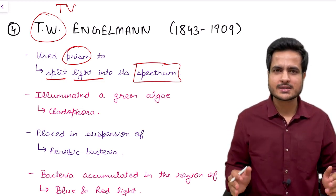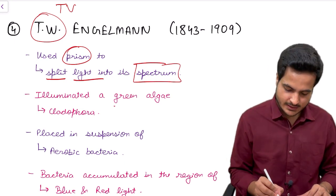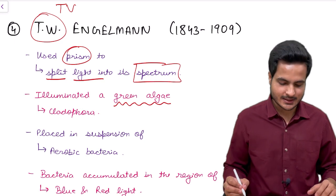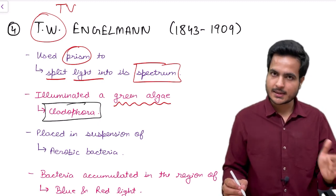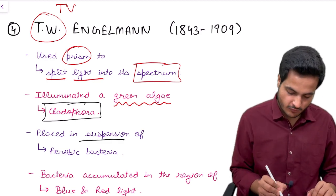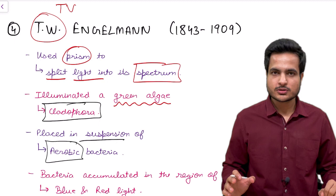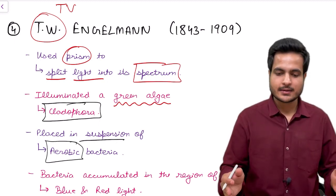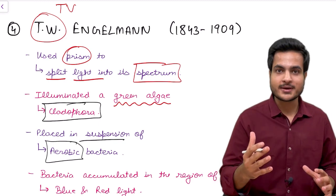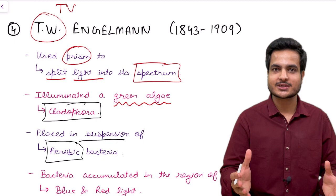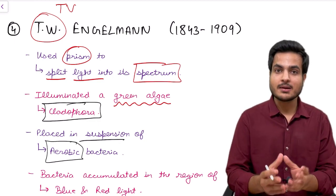So he split the white light into a spectrum of seven colors, that is VIBGYOR, just similar to a rainbow. And he illuminated green algae by this light. Green algae just because green part of the plant was doing the photosynthesis. The name of the algae was Cladophora. He illuminated green algae named Cladophora and placed this algae in a suspension of aerobic bacteria, the bacteria which uses oxygen for multiplication and their metabolism. He split the light, he used green algae because he knew green part will only release oxygen, and to test where oxygen is released in more quantity, he used the bacteria which require oxygen for multiplication. So if oxygen is released in particular color of light, in that particular region, the number of bacteria multiplying would be more.